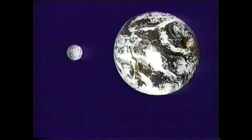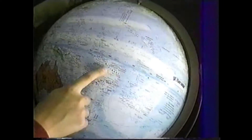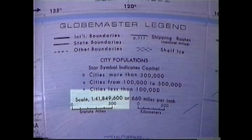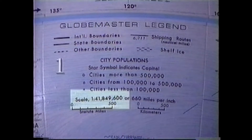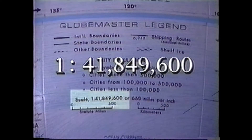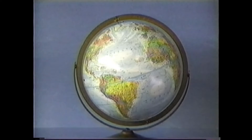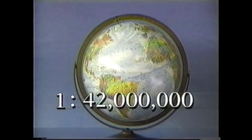The difference in size is expressed as a ratio. Looking at this globe, we can find the legend and see the globe's scale right here. It is read as 1 to 41,849,600. We usually round this off to 42 million, so we would say this globe has a scale of 1 to 42 million. That's its ratio.